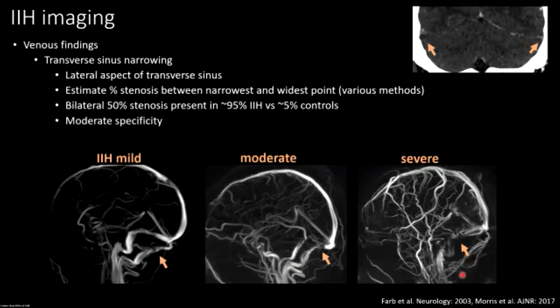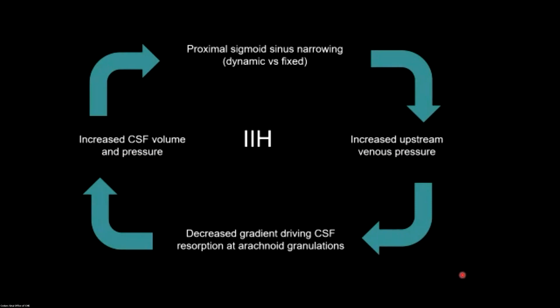You can assess this with CTV, MRV, or contrast-enhanced MR, which is shown to be almost as good. The idea of dynamic compression is compelling: whether the stenosis was fixed or dynamic initially, once present, we get backup of blood upstream in the dural venous sinuses over the top of the head. That decreases the pressure gradient between CSF and the venous compartment, slowing CSF resorption. Consequently, CSF pressure goes up, further compressing the transverse-sigmoid junction — a bad feedback loop.